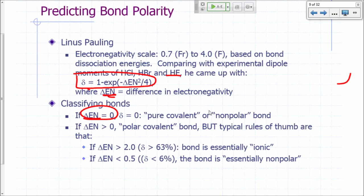If the electronegativities are the same, so the difference in electronegativity is 0, then you have what's called a pure covalent or nonpolar bond. Your ionic character is 0.